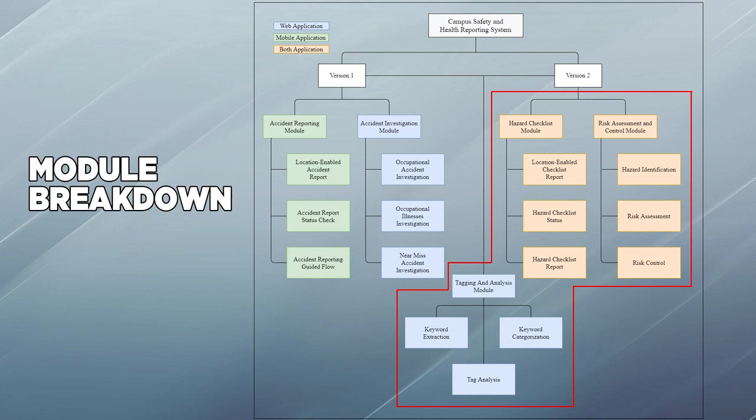The Hazard Checklist Module is responsible for OSH representatives to conduct hazard identification. The Risk Assessment and Control Module enables UKKPU to assess and control risk by verifying the HIRAC reports that have been submitted. The Tagging Analysis Module has been updated from version 1 with the two new modules added. This module provides statistics and uses the RAID algorithm to generate tags for labeling reports.